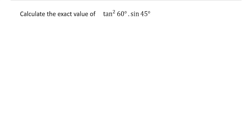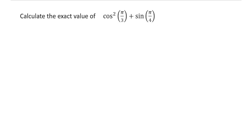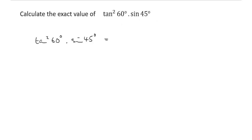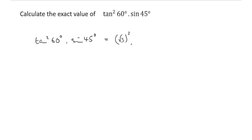Calculate the exact value of tan squared 60 degrees times by sine 45 degrees. So tan squared 60 degrees times by sine 45. Well, we just got to revert to our table. What's tan 60? Tan 60 is root 3. So we've got root 3 squared. And what's sine 45? Sine 45 is root 2 upon 2. So we times this by root 2 upon 2. What's root 3 squared? That's just 3. So we end up with 3 root 2 upon 2. And that's our final answer.